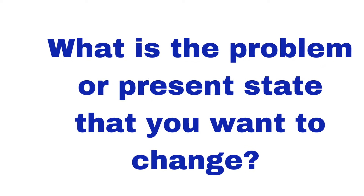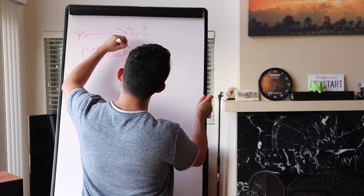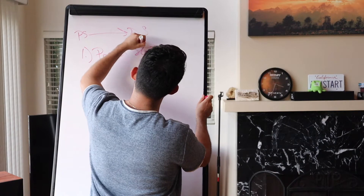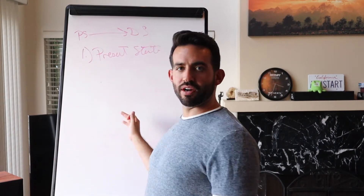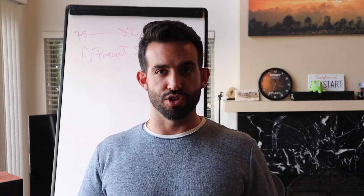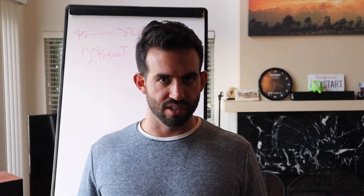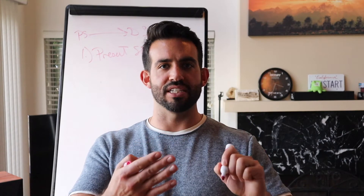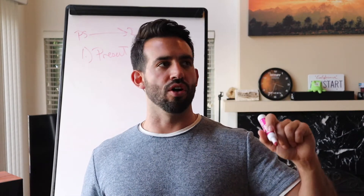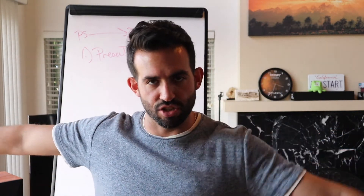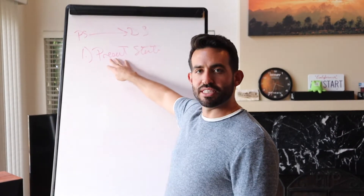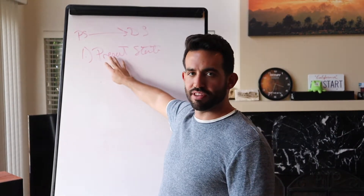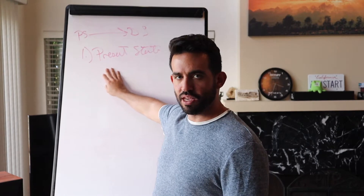So first, what is the present state? Are you a smoker and you want to quit smoking? Do you want to work out more? Do you want to stop eating carbs? What is the limitation that you have? Write it out. Stop what you're doing right now. My present state is: I feel blank when blank. So you have your present state — limitation, behavior, habit, way of thinking, whatever it is.